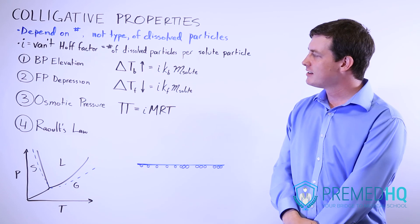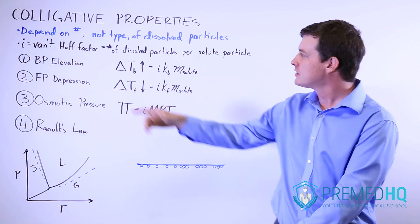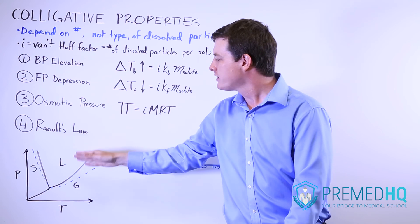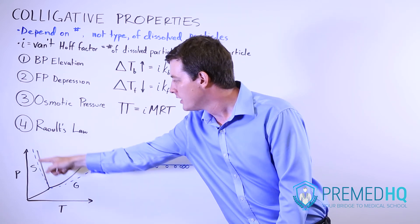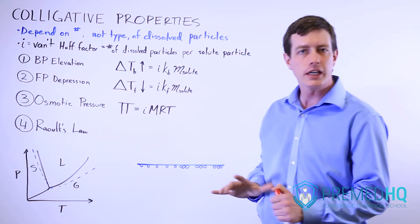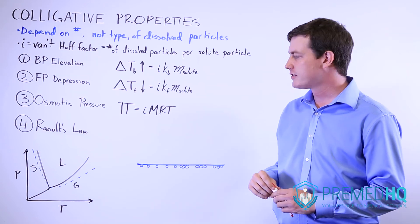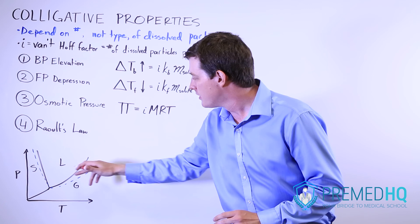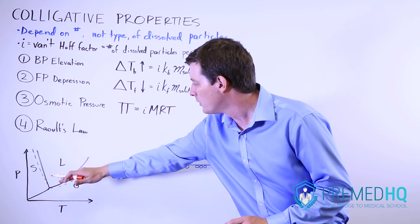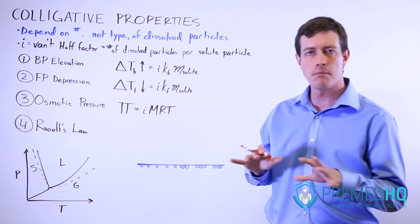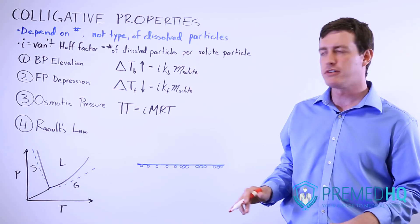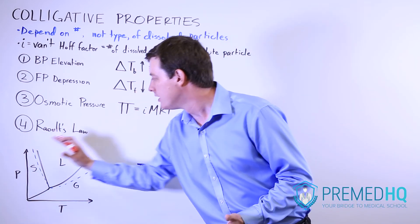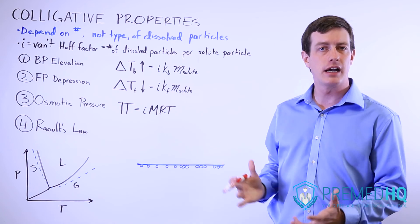The first thing to note is that for the boiling point elevation and the freezing point depression, what they serve to do is keep the solution in the liquid phase for longer. They make it harder to boil the particular solution, increasing the likelihood that it remains in the liquid phase, and they also make it harder to freeze, pushing the freezing point a bit to the left as well.